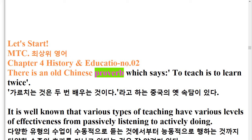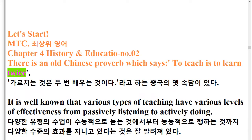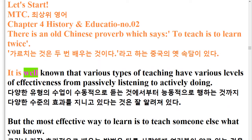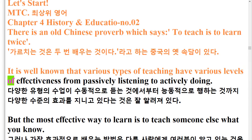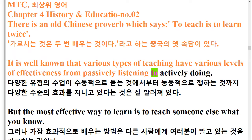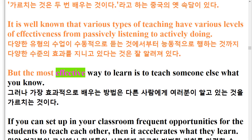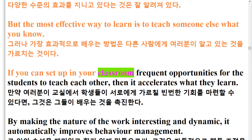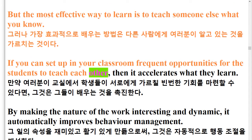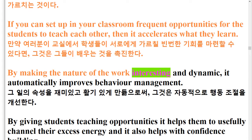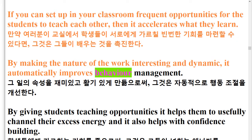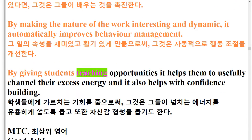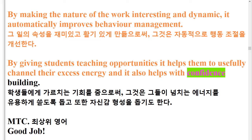There is an old Chinese proverb which says to teach is to learn twice. It is well known that various types of teaching have various levels of effectiveness from passively listening to actively doing. But the most effective way to learn is to teach someone else what you know. If you can set up in your classroom frequent opportunities for the students to teach each other, then it accelerates what they learn. By making the nature of the work interesting and dynamic, it automatically improves behavior management. By giving students teaching opportunities it helps them to usefully channel their excess energy and it also helps with confidence building.